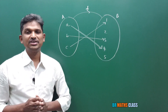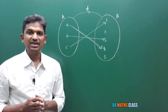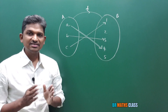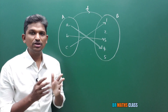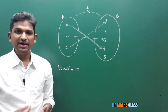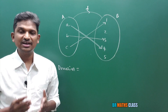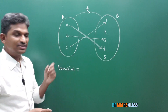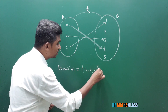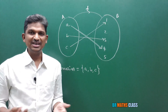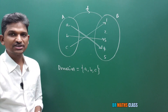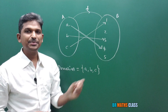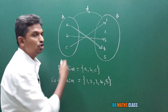So f from A to B is a function. If f from A to B is a function, then set A is called domain and set B is called codomain. Domain is for what values of x the function is defined. Here it is defined for these three values, so the domain of this function is {a, b, c}. Set B is called codomain of this function.